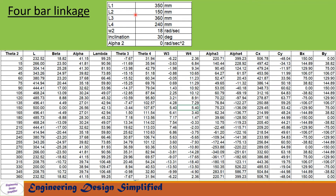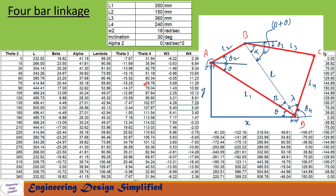Now let us solve a problem using Microsoft Excel. The parameters are: l1 = 350 mm, l2 = 150 mm, l3 = 360 mm, l4 = 240 mm, omega2 = 18 rad/s, inclination = 30 degrees, and alpha2 = 0 rad/s². Theta2 runs from 0 to 360 degrees at 15-degree intervals. The subsequent columns compute l, beta, alpha, lambda, theta3, theta4, omega3, omega4, alpha3, alpha4, Cx, Cy, Bx, and By. Note that a negative sign is applied to the theta3 formula when link BC is below the diagonal line.